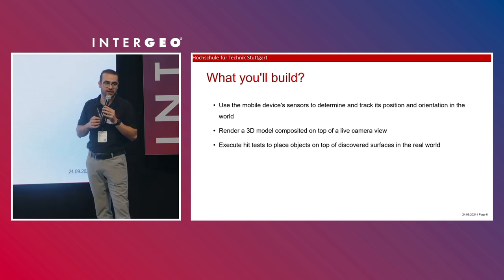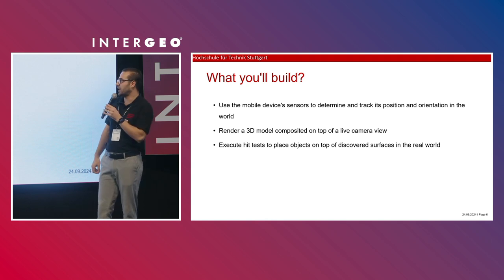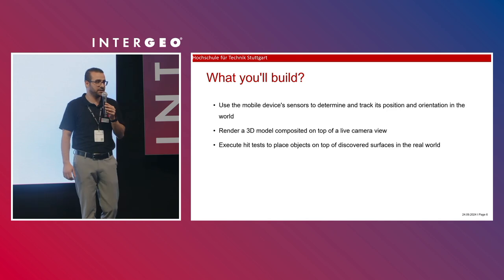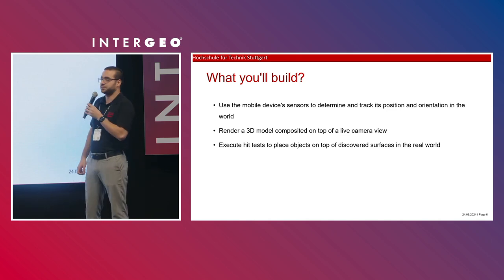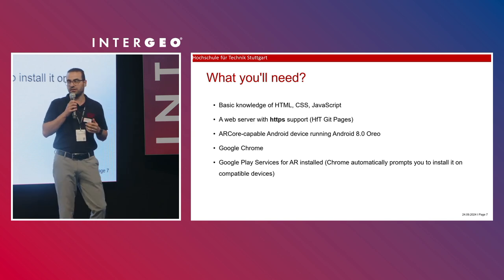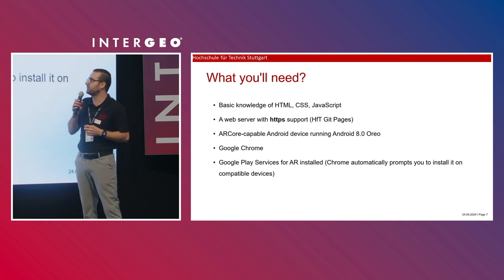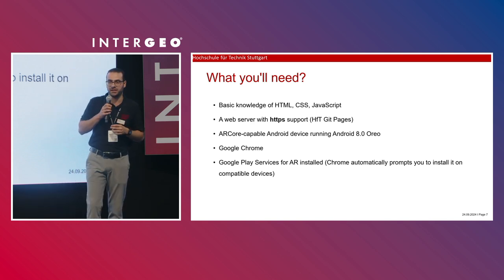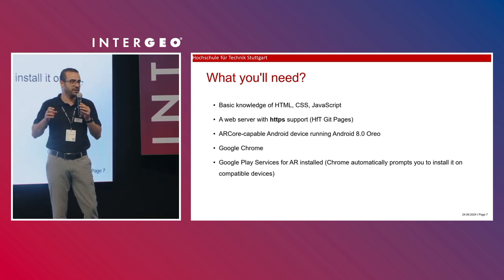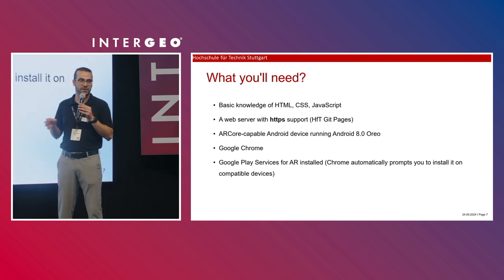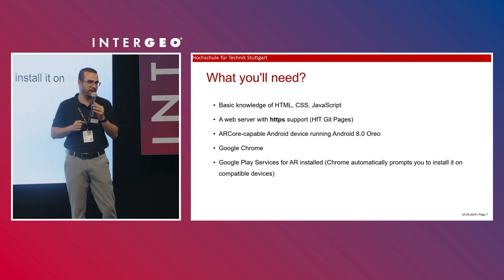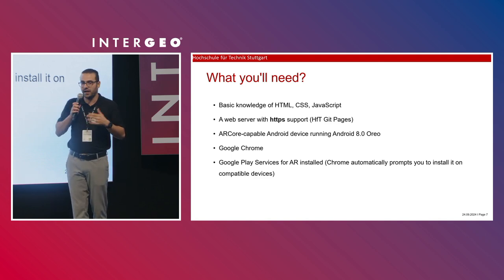We make use of the onboard IMU of the device, like the gyroscope, along with the camera to render a 3D model. Since it is very simple, only basic knowledge of web development — including HTML, JavaScript, and CSS — is needed, alongside a server. You can use our university server via HFT GitLab pages, so no dedicated server is required, plus a smartphone.